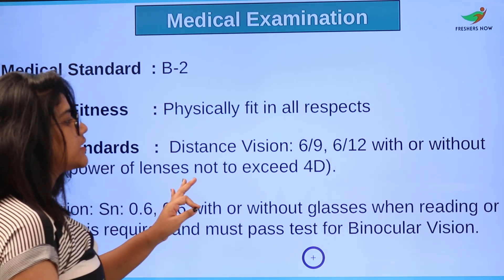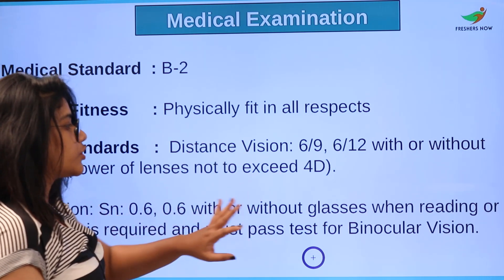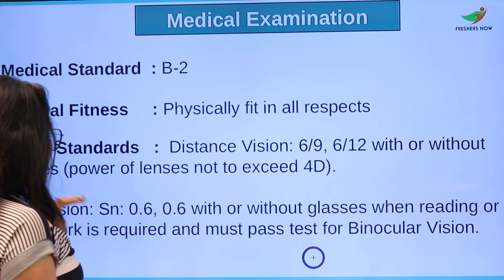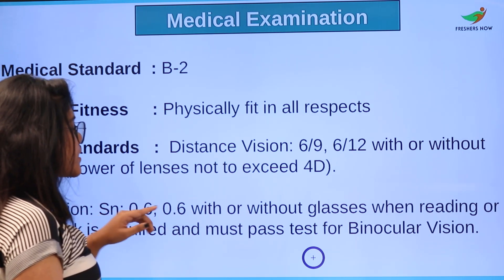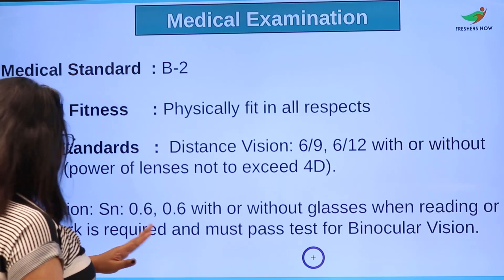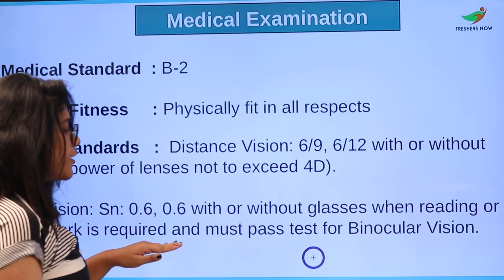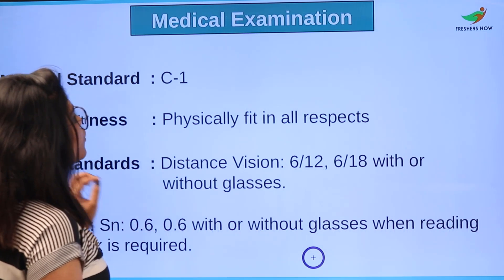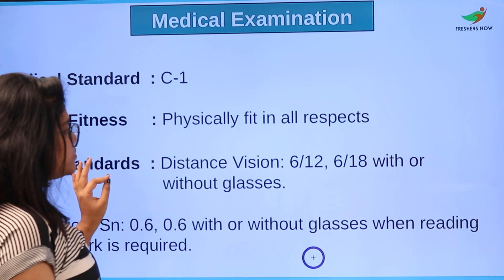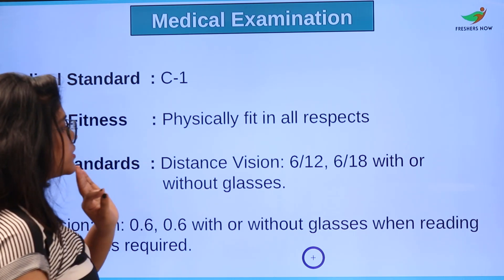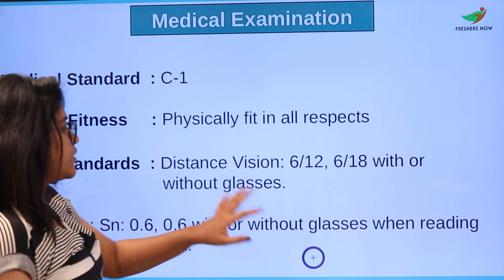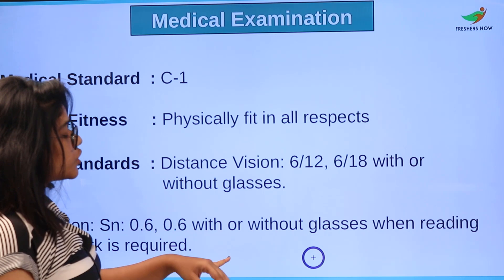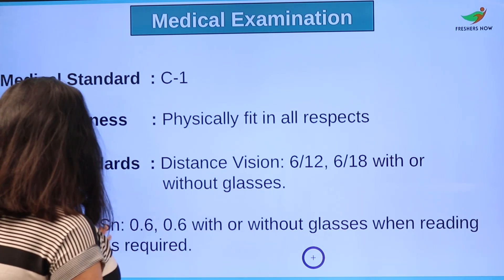For medical standard B2: physically fit in all aspects. Vision: 6/9 or 6/9 with or without glasses, and lenses should not exceed 4D. For near vision, SN 0.6 and 0.6 with or without glasses when reading or close work is required. Must pass binocular vision. For C1: physically fit in all aspects. Distance vision should be 6/12 and 6/18 with or without glasses. For near vision, SN 0.6 and 0.6 with or without glasses when reading or close work is required.